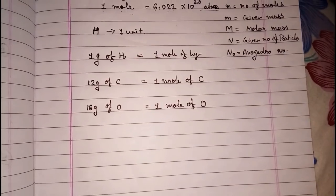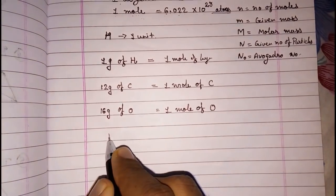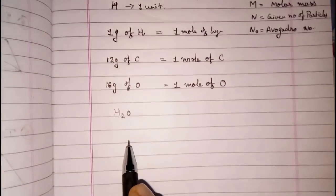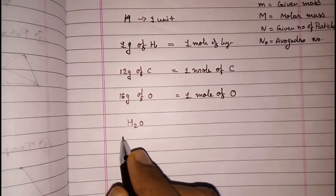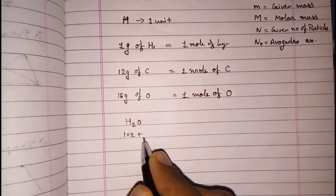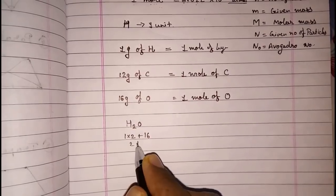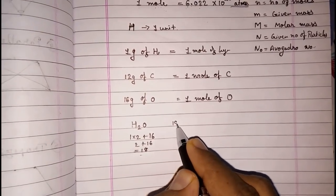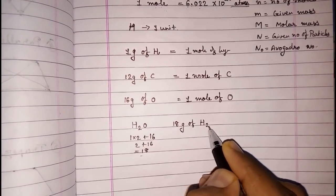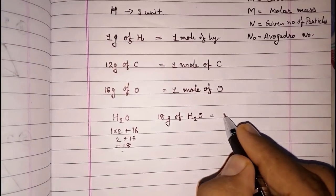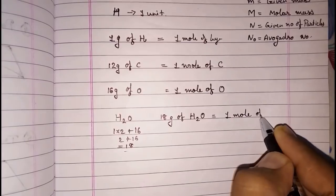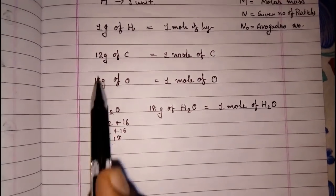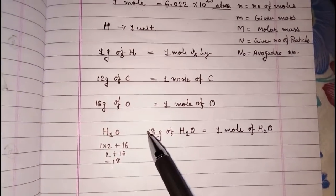Now I am taking a molecule. What is the mass of one molecule of H₂O? Two units of hydrogen — that is 1 into 2 — plus mass of oxygen which is 16, so it is 2 plus 16 = 18. So we can say 18 grams of H₂O combines to form one mole of H₂O.